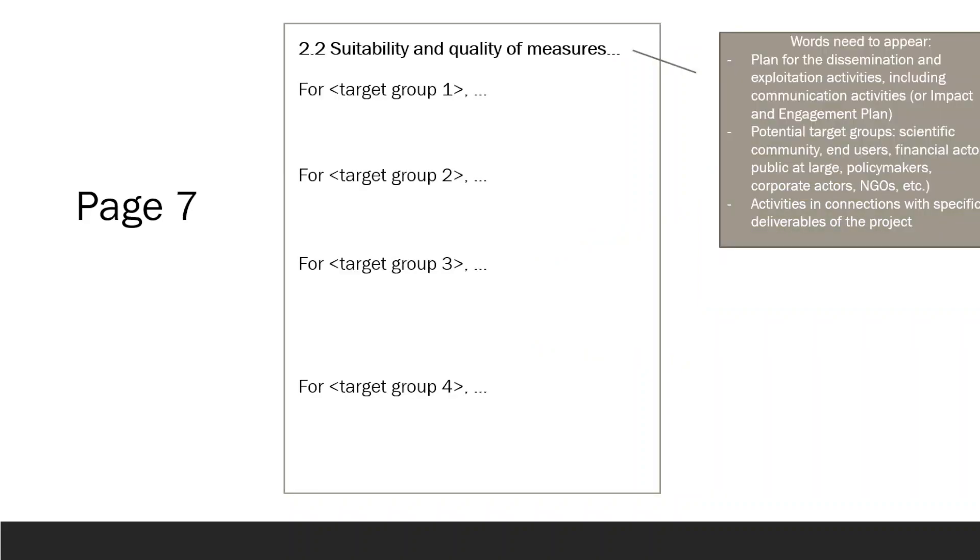Page 7 will be dedicated to Part 2.2, Suitability and Quality of the Measures to Maximize Expected Outcomes and Impacts, as outlined in the Dissemination and Exploitation Plan, including communication activities. First, mention that you have a Dissemination and Exploitation Plan, which you will describe in this section. Then, proceed to describe it in separate paragraphs for each target group.